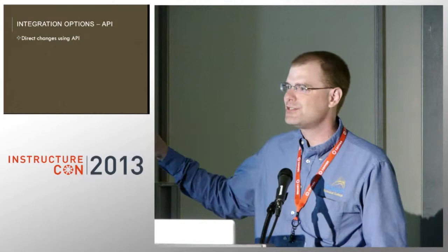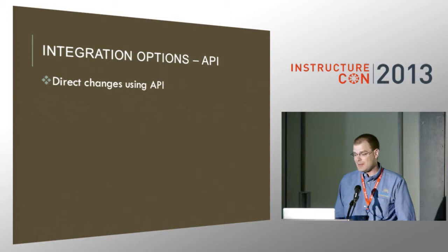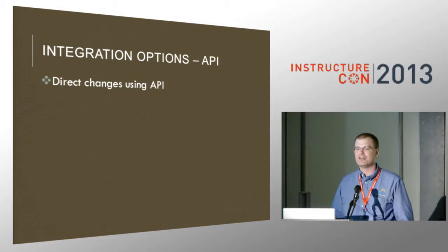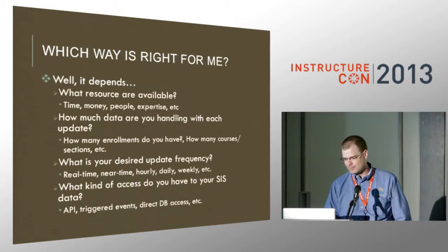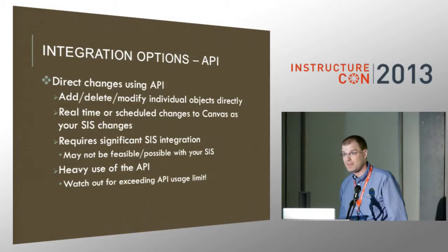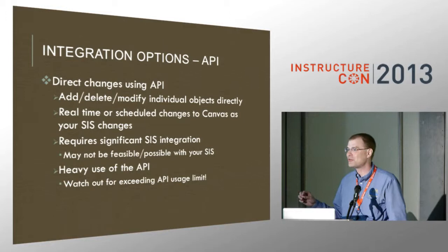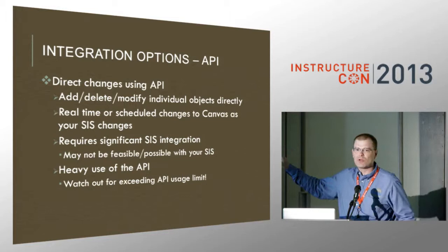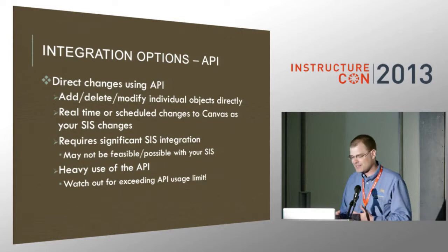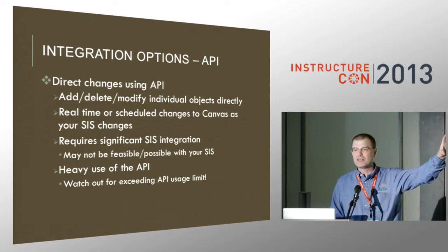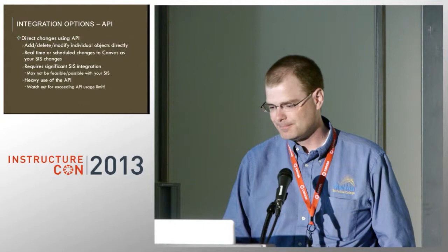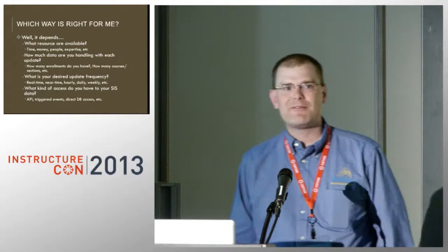There is one other method you could use: direct changes to the API — meaning in real time or scheduled, you could use the API without using SIS imports and say 'create this enrollment, delete this enrollment, create this course.' I wouldn't touch that with a ten-foot pole. First of all, you have a limit of 300 API calls per user per hour. If you're touching each individual object directly, that could easily exceed 300, especially during enrollment periods. So it's an option for exceptions — like if I want to create a term through the API without uploading an SIS file.